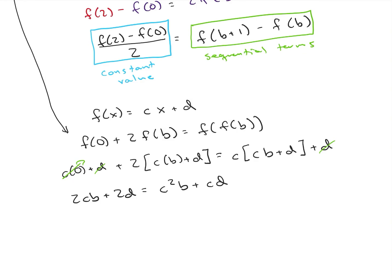So I'm going to rearrange just a little bit more so that we can see it's going to be b times 2c minus c squared plus d times 2 minus c equals 0.